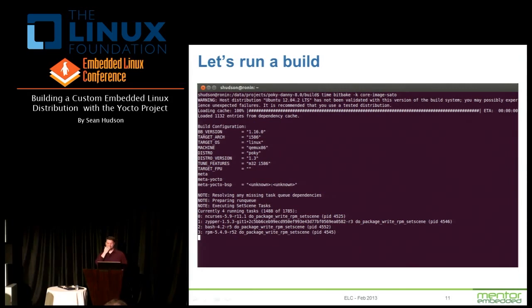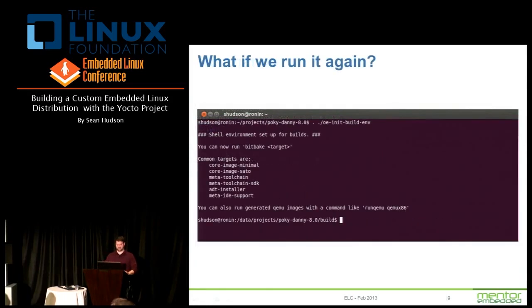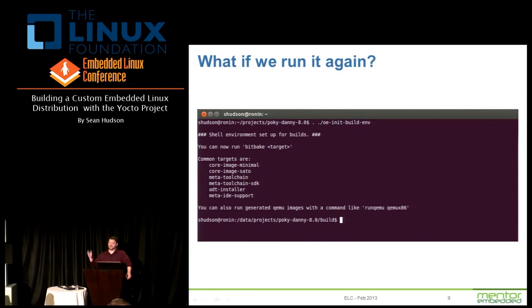Let's go ahead and run a build — this is just a snapshot. I actually ran a Sato build. Core-image-minimal is just a very minimal build. Core-image-sato is an example UI based off of, I think, the GNOME UI. It's an extremely useful package to build because it touches a lot of different packages and a lot of different recipes. I don't generally use most of the other targets, but they're there for reference.